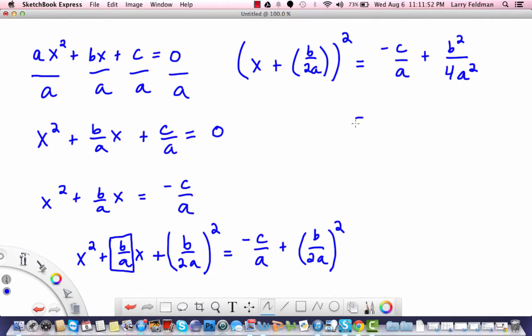Now we need a common denominator so that we can combine these two fractions. You can tell that we need to multiply the top and bottom of negative c over a by 4a. So let's multiply top and bottom by 4a.